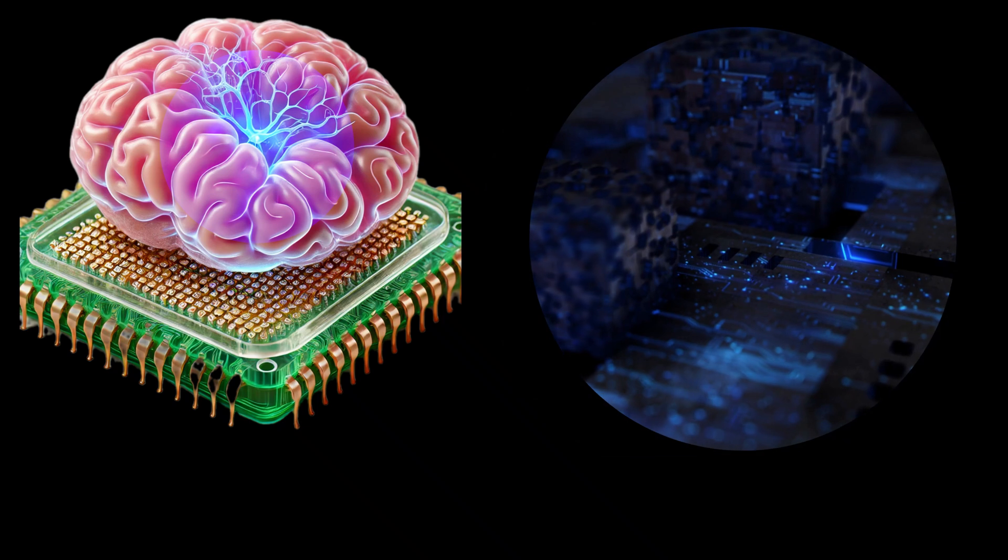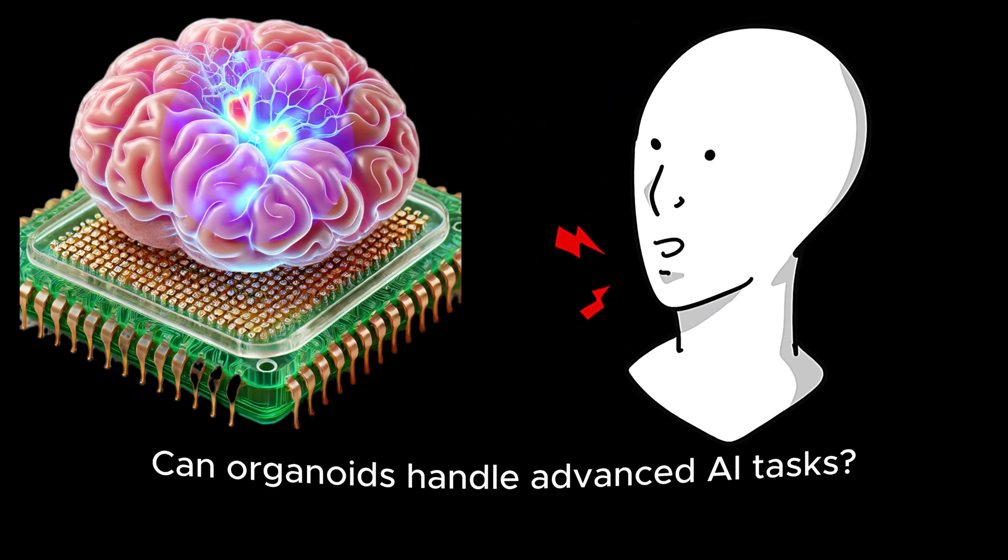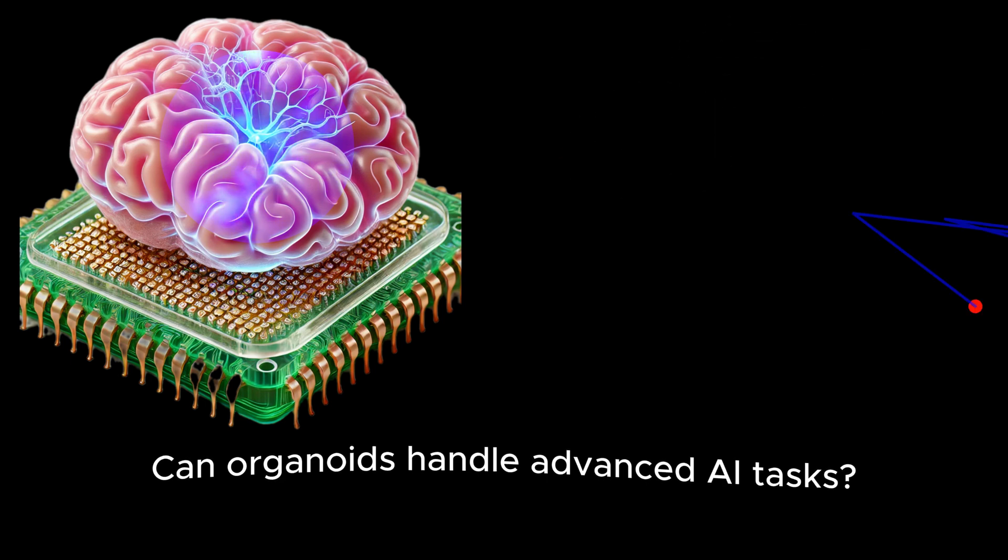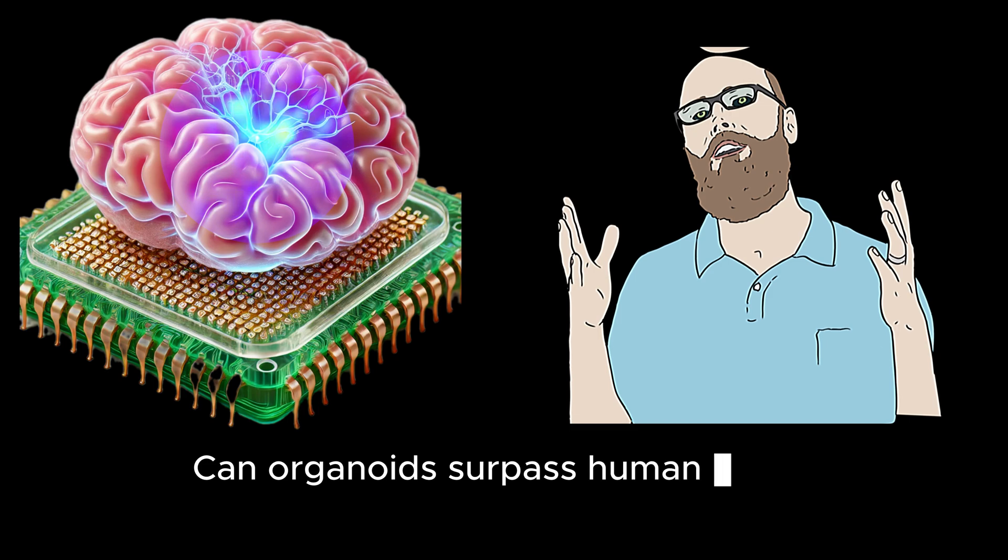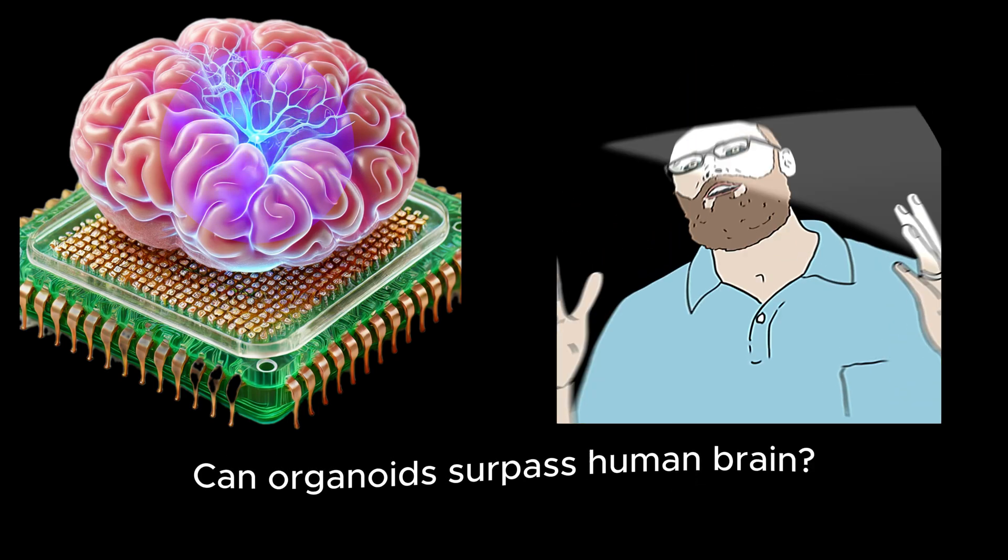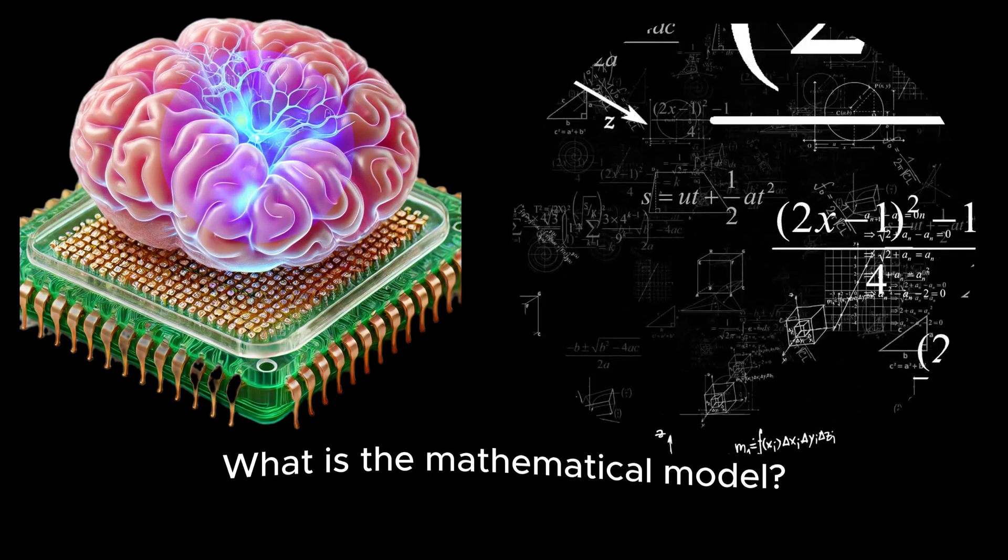And here is the puzzle. How can a tiny organoid, grown in a lab, leap ahead of decades of technological advancements? Can it truly handle tasks like speech recognition or predicting chaotic systems? Could we manipulate these organoids to surpass average human thinking power? And how do we even begin to mathematically model such a complex living system?